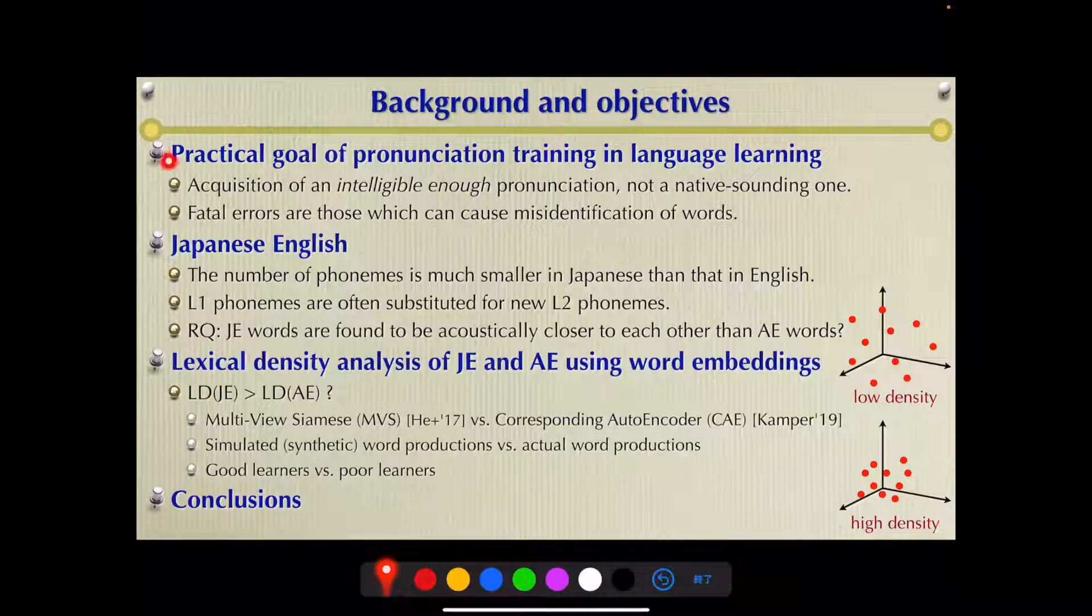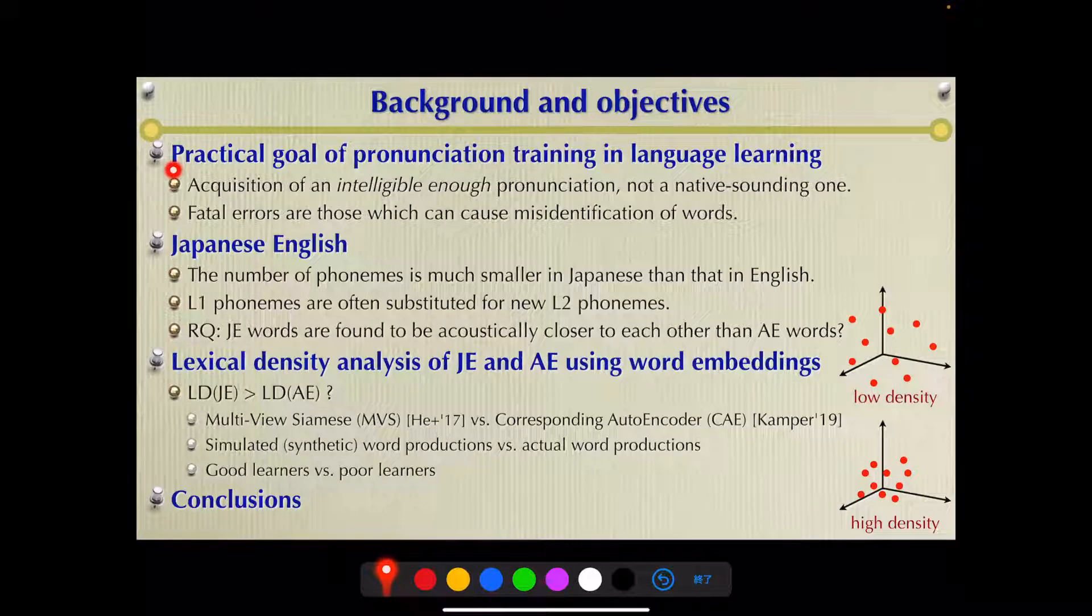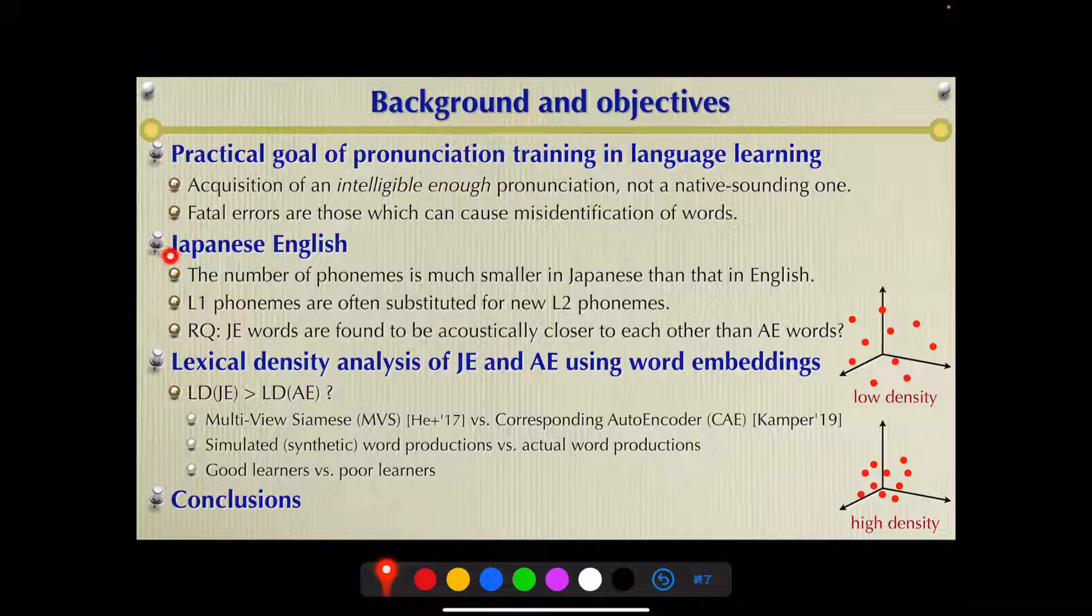The practical goal of pronunciation training is acquisition of intelligible enough pronunciation and avoiding errors that can cause misidentification or fatal errors. In this work, we put a special focus on Japanese English because in JE, misidentification may occur not rarely.